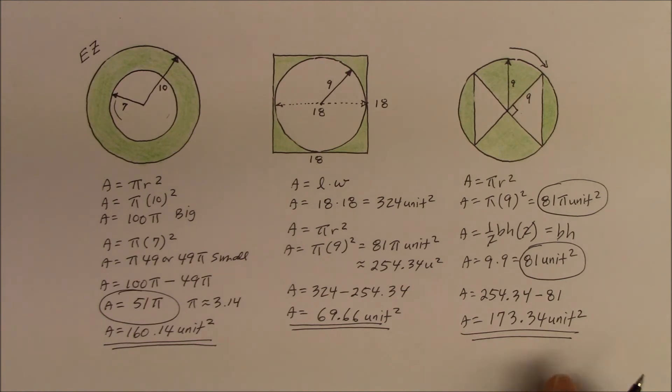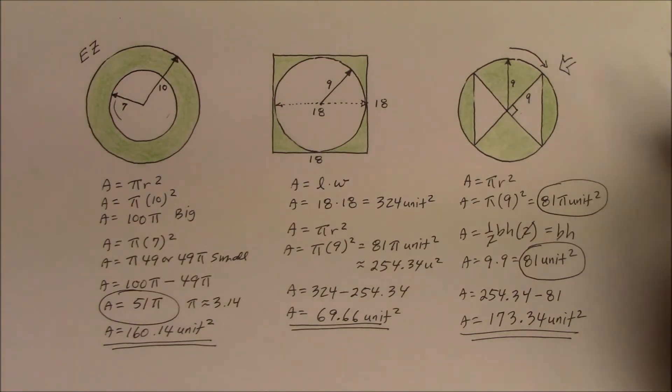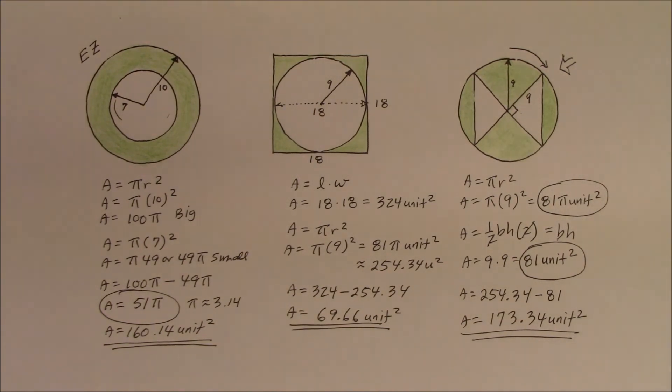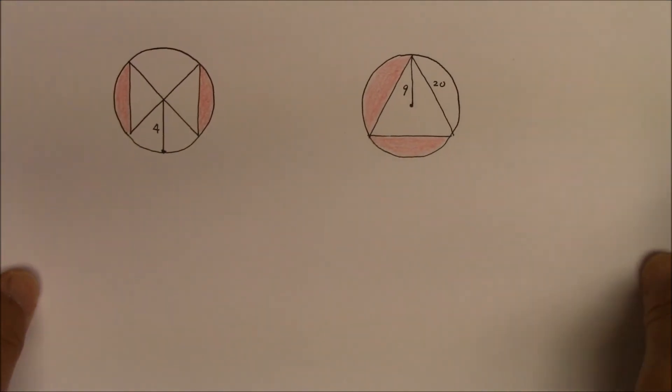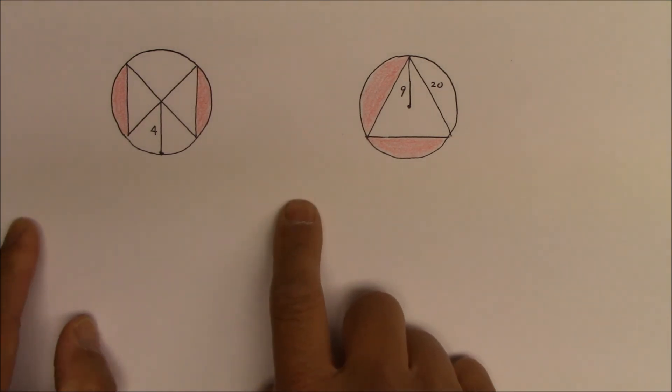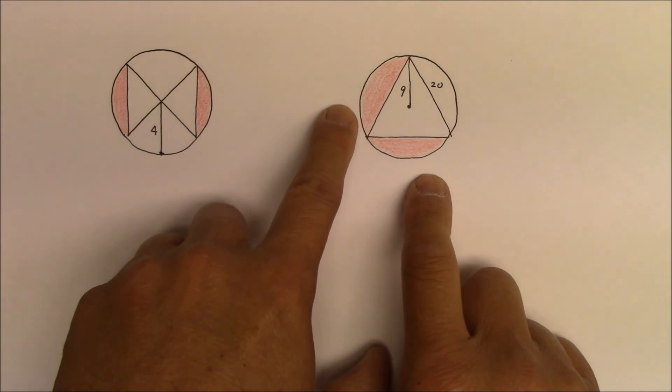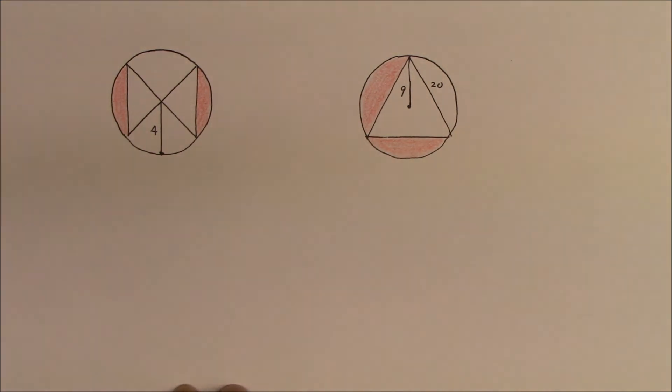So if you're kind of stumped with this particular question, and now that you see how it's done, maybe you could challenge yourself and try this one. Find the area of a shaded region in red. Go ahead. Good luck.